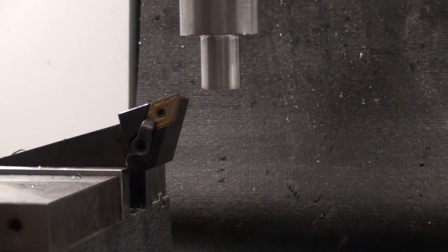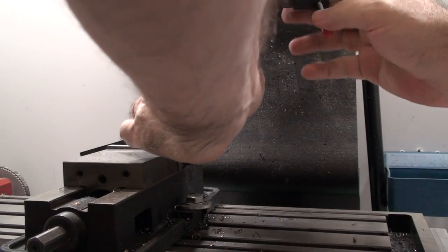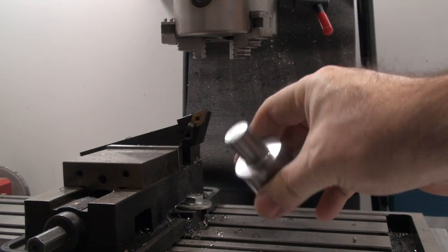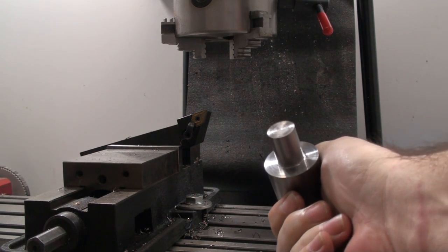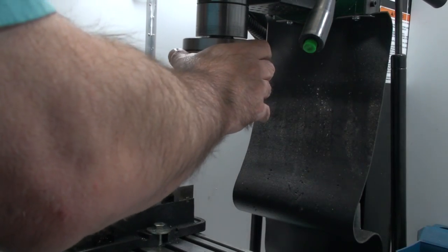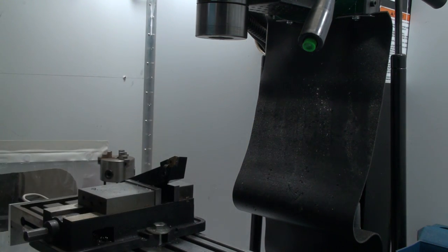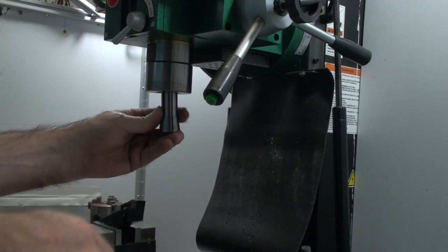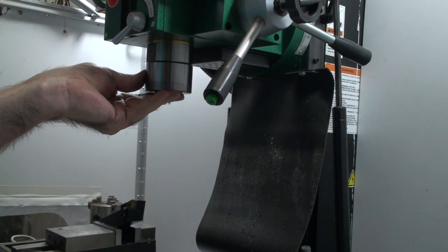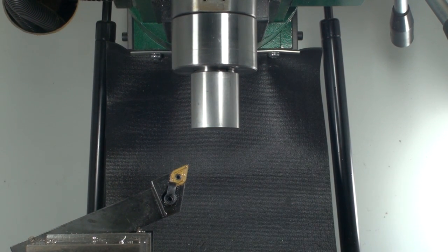Once we have the 3/4 inch shank turned down, it's time to take the lathe chuck out and replace the Tormach tool holder collet in the spindle. We turn the blank around and we mount the shank in the collet for the next set of cuts.